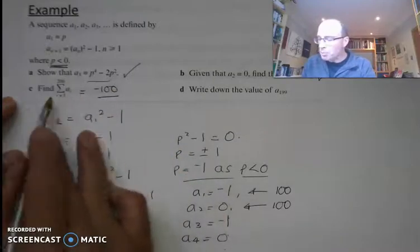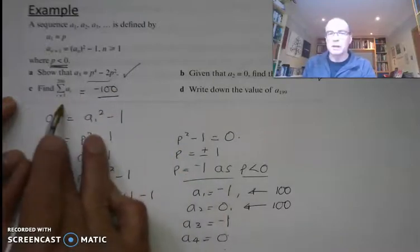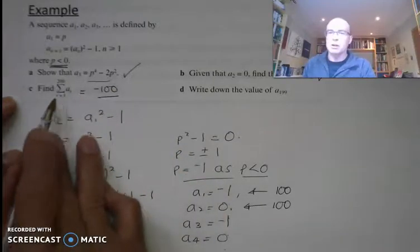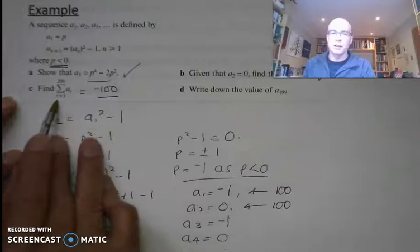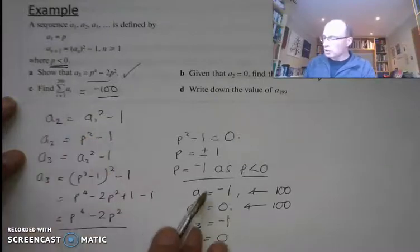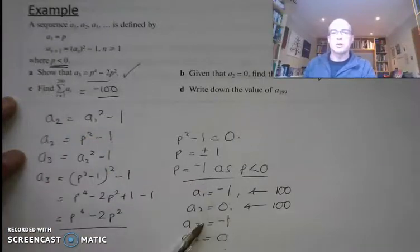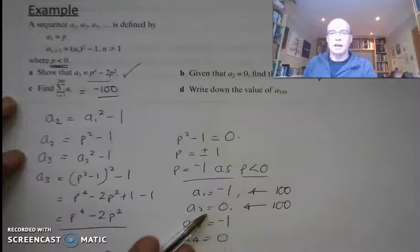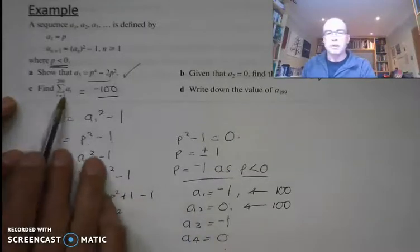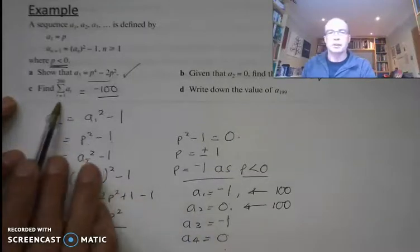So if you've got a complicated sum that's not arithmetic and not geometric and you can't use your formulae, write your terms out, try and spot a pattern, and then use logic to work out what the sum is going to be.